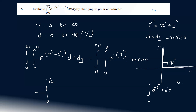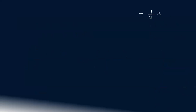Using integration by substitution: let u equal to r squared, then du by dr equals 2r, so du equals 2r dr. The integral becomes e raised to minus u, times du by 2, giving 1 by 2 integral of e raised to minus u du. That equals 1 by 2 into e raised to minus u divided by minus 1, which is minus 1 by 2 e raised to minus u.